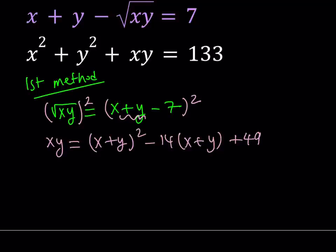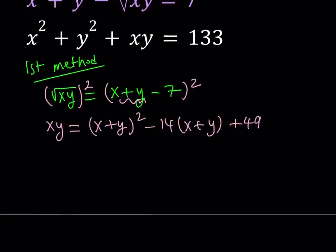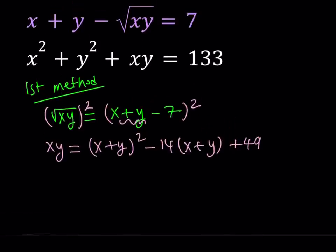Now it's better to leave it like this because we're going to turn this into a different system, and you're going to see that in a little bit. So I'm not going to expand x plus y quantity squared. My second equation can also be manipulated. So I can replace x squared plus y squared with x plus y quantity squared minus 2xy, but then there's a xy here. So I can just write it as minus xy equals 133.